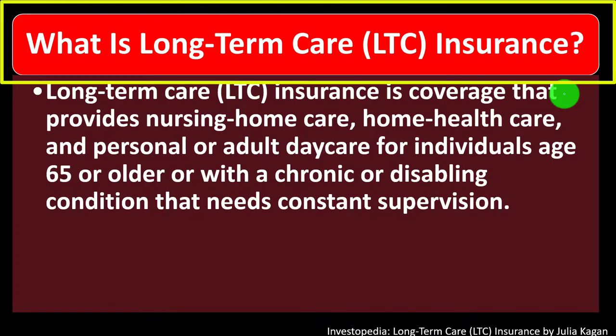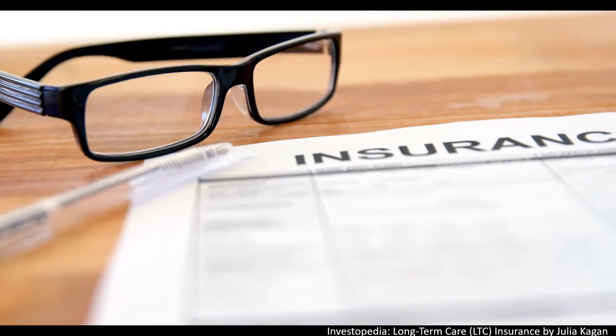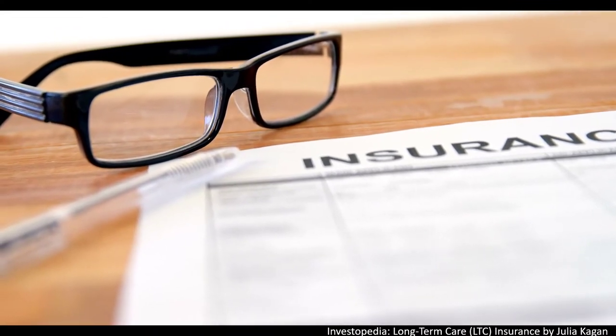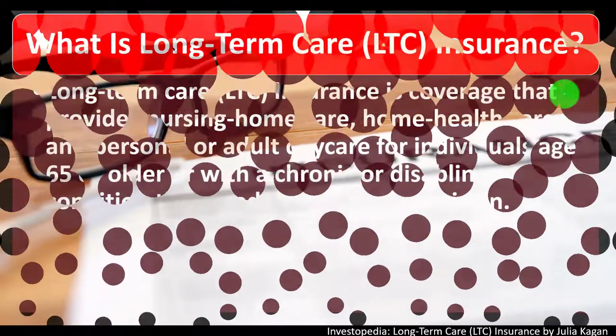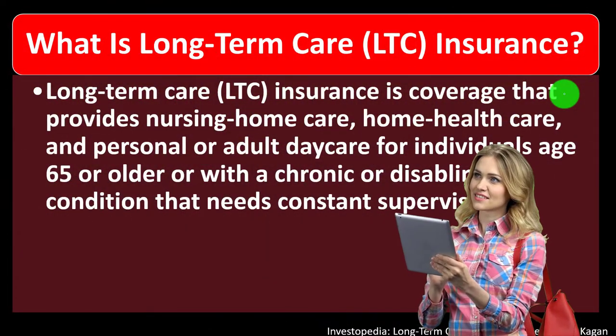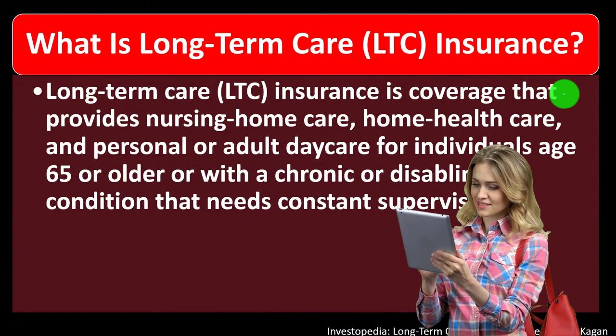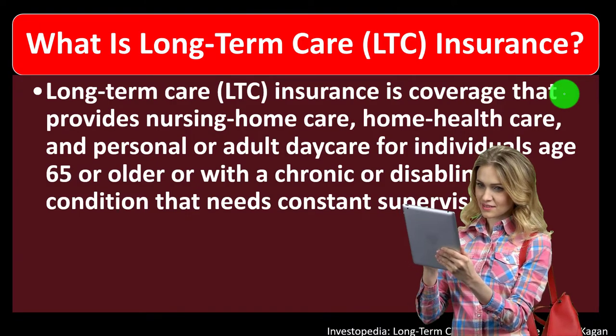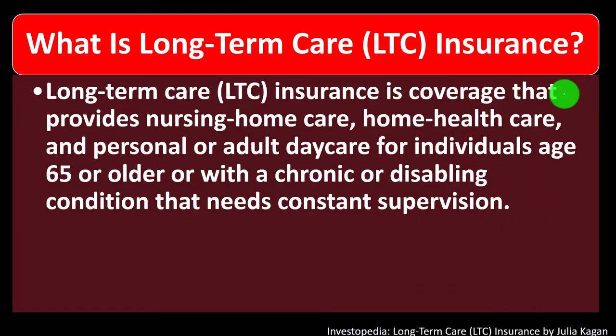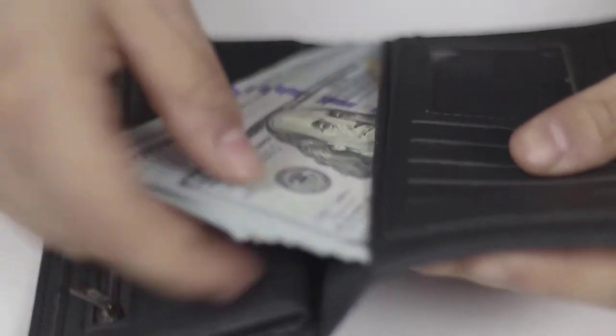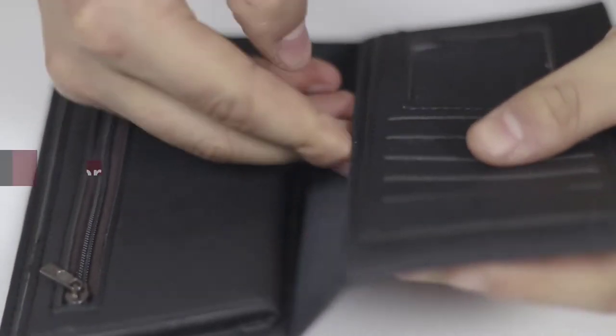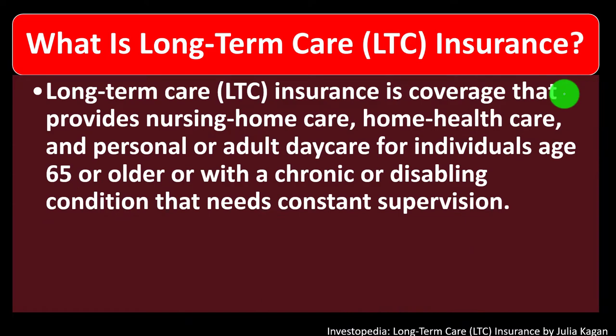To get some perspective, it's useful to look at traditional kinds of insurance first. For example, property insurance, life insurance, and liability insurance — these are classical kinds of insurance where we're insuring against something we're hoping doesn't happen, but if it did, would be financially devastating. We insure for things like premature death, being sued for millions of dollars, or having our home burn down.